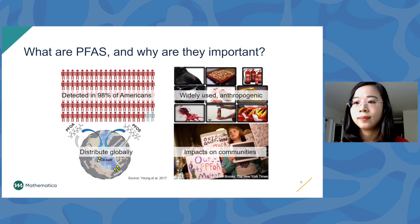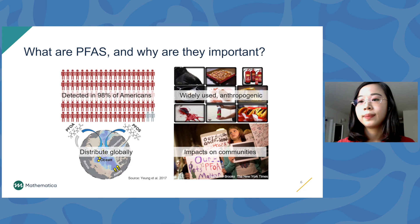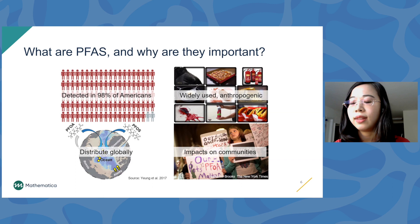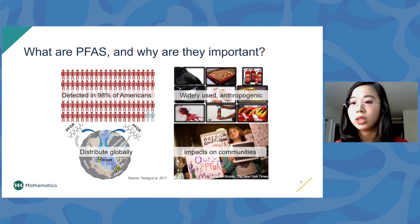PFAS are very persistent, which means they don't break down and can be transported over very long distances. Scientists have found them in the most remote regions on Earth, such as in polar bears near the North Pole. PFAS have already caused a lot of concern in local communities. Research has shown probable links between PFAS exposure and testicular and kidney cancer, thyroid disease, high cholesterol, and pregnancy-induced hypertension.